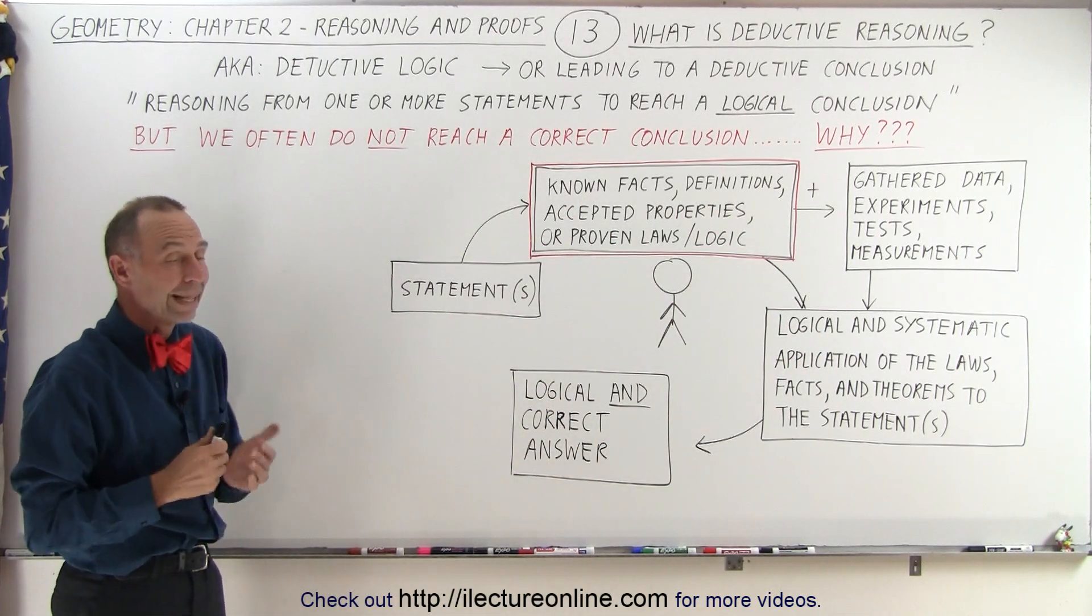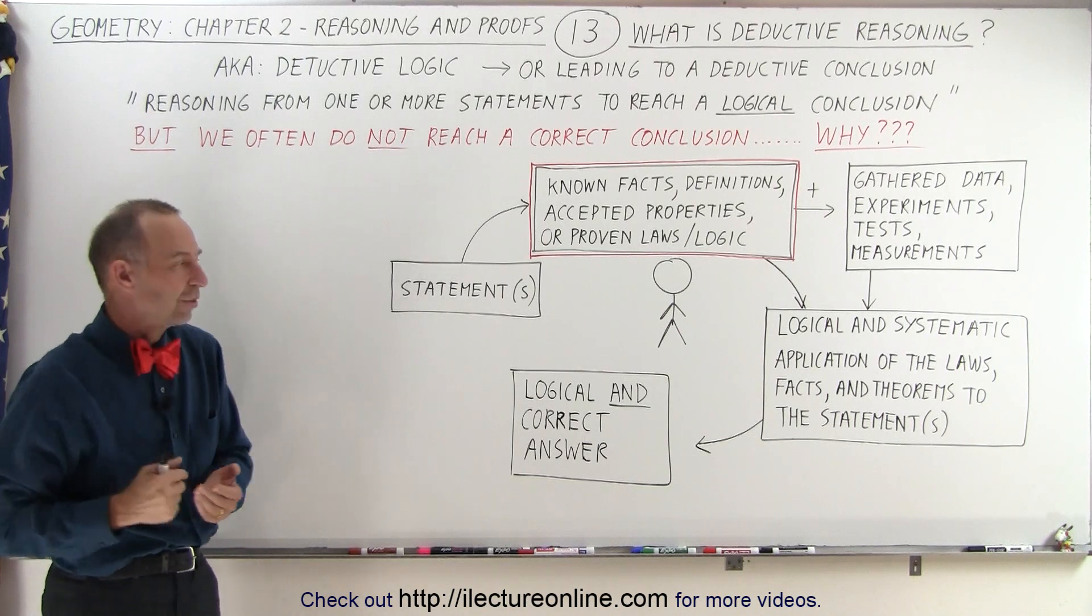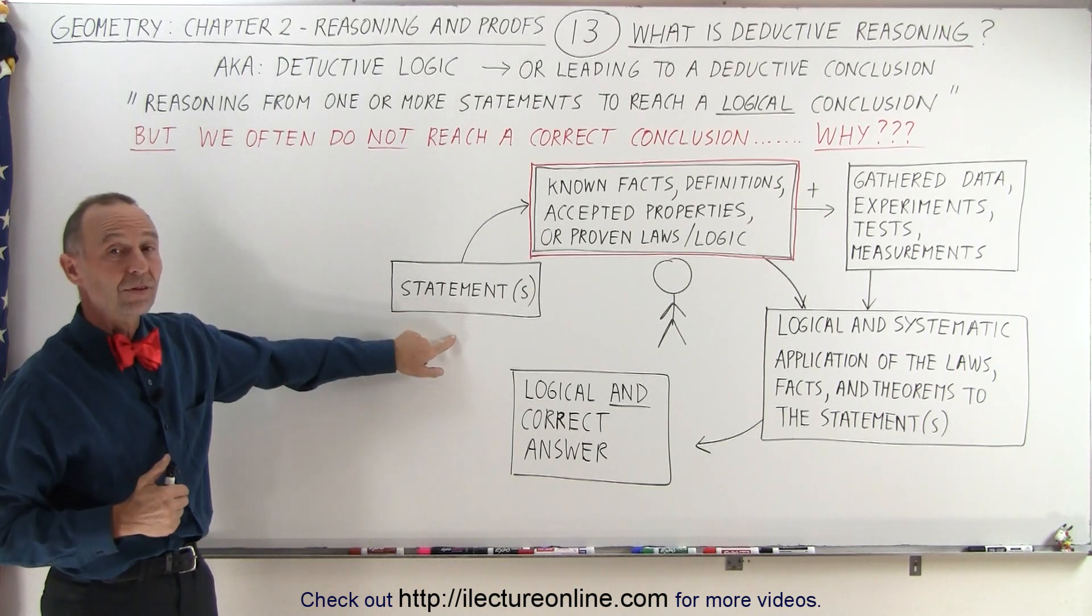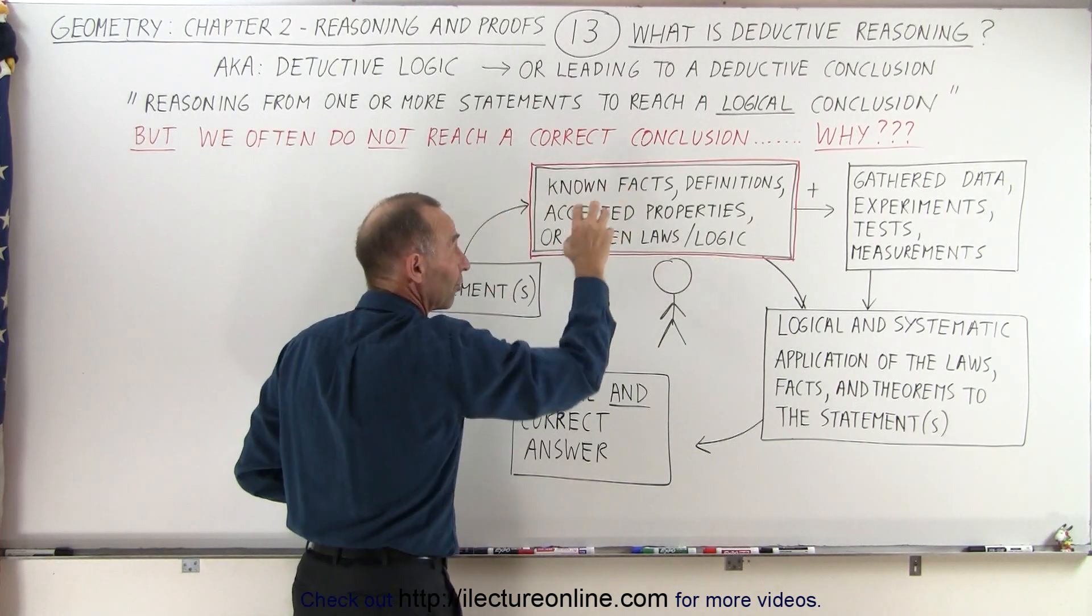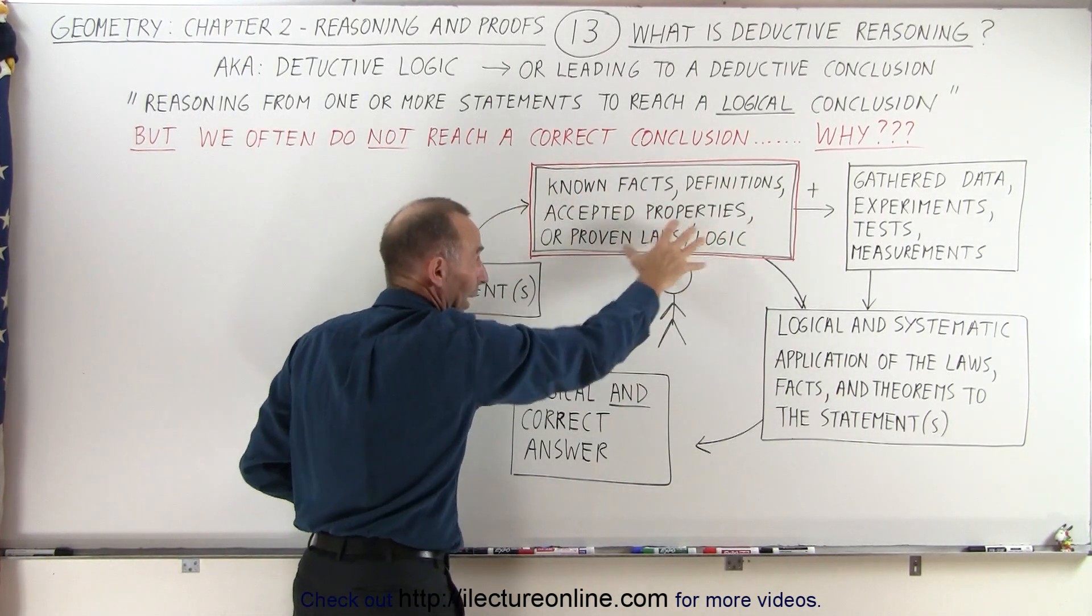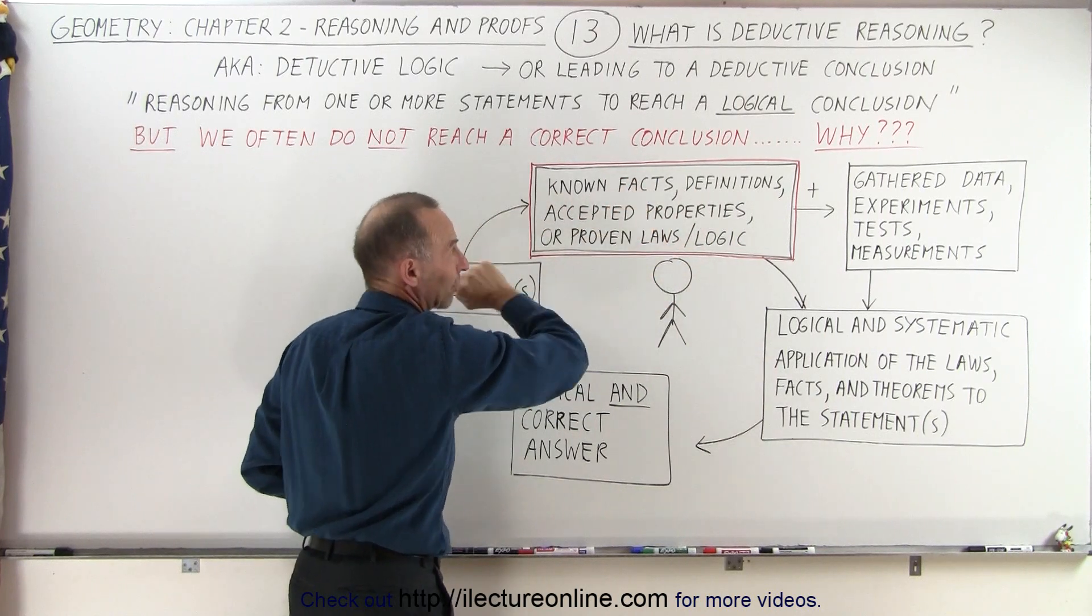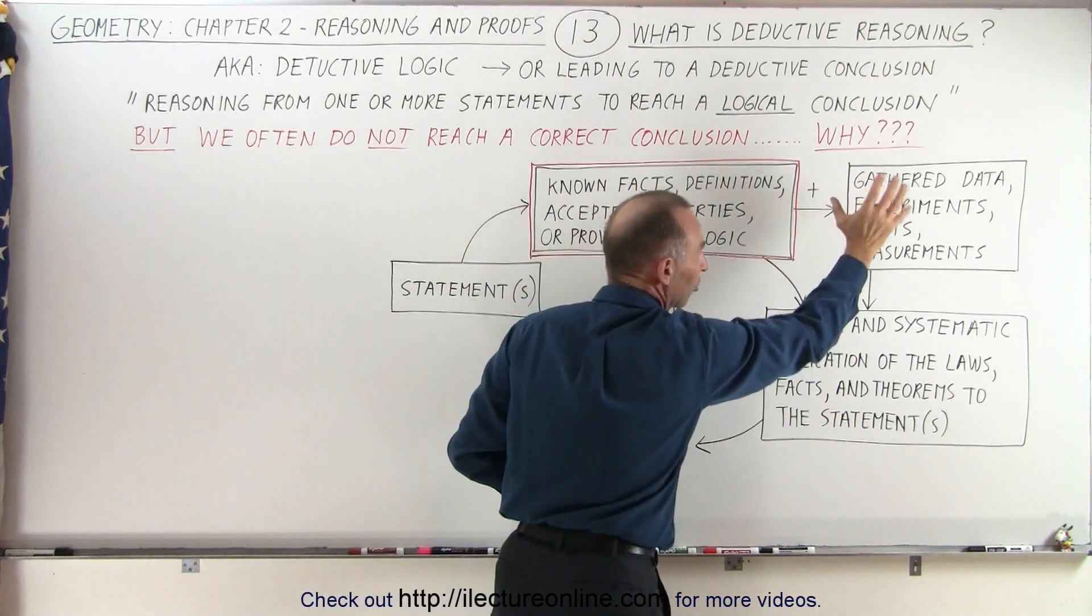So there you go. That is what we mean by deductive reasoning. It's starting with a premise that we're trying to figure out. We use information that is correct, that we know to be factual. We may need additional data.